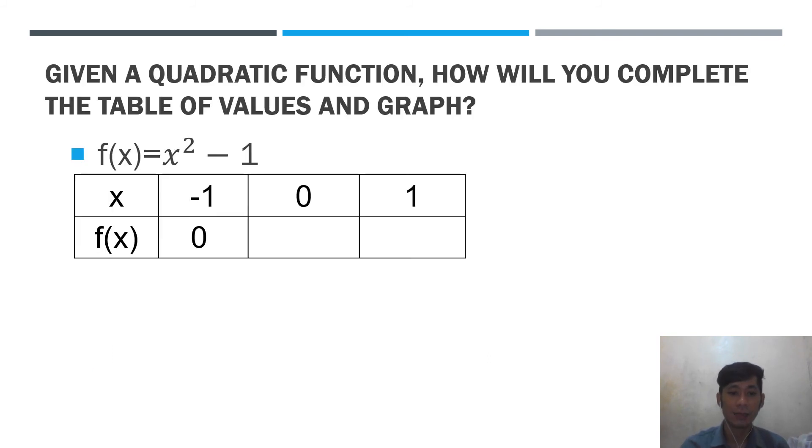Let us have another example. So yan po yan. So, hahanapin po natin. If x is 0, ano naman po yata yung y natin o yung f(x) natin? So, we replace x by 0. So, 0², 0 times 0 is 0, minus 1 is negative 1. Very good.